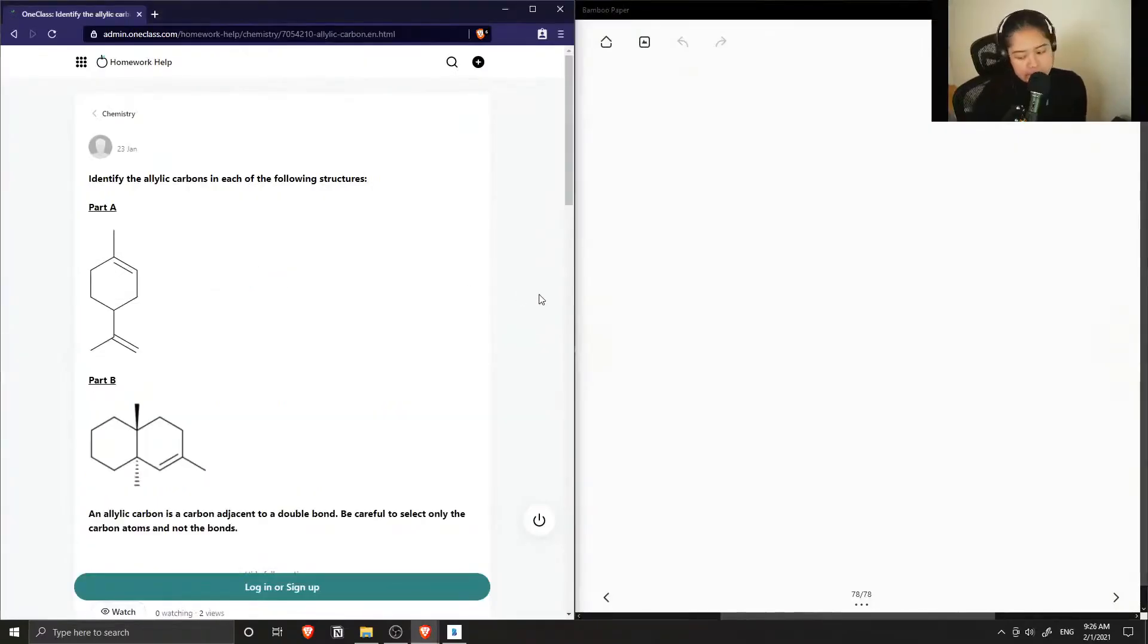Okay, so question number seven. Identify the allylic carbons in each of the following structures.